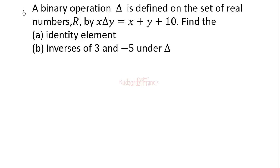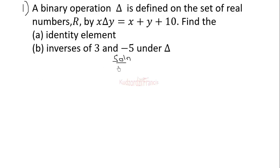WASSCE 2020 Elective Mathematics Paper 2, Question 1. A binary operation triangle is defined on the set of real numbers by x triangle y equals x plus y plus 10. We need to find the identity element, the inverse of 3, and the inverse of negative 5 under triangle.